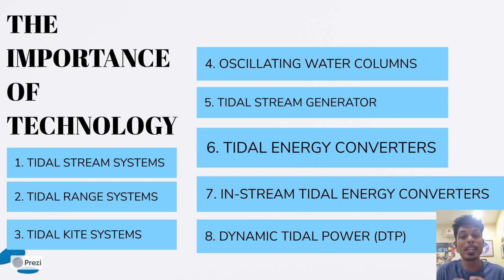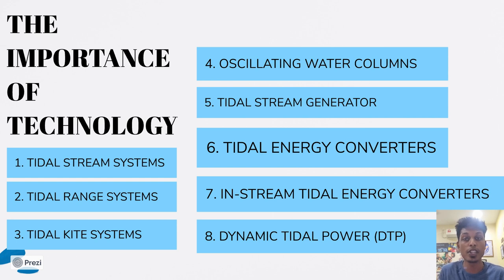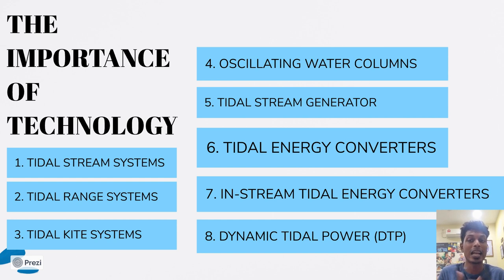Technology is basically the way we execute the discoveries of science and blend it with our own needs. Tidal energy encompasses various systems designed to capture and convert the renewable energy produced by the gravitational forces between the Earth, Moon, and Sun, and it is also considered clean energy. These systems include tidal stream systems, tidal range systems, tidal kite systems, oscillating water columns, tidal stream generators, tidal energy converters, in-stream tidal energy converters, and lastly dynamic tidal power, also known as DTP.